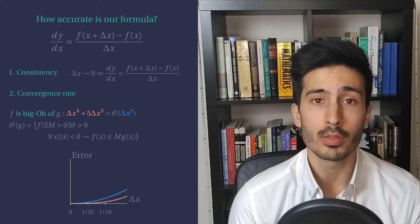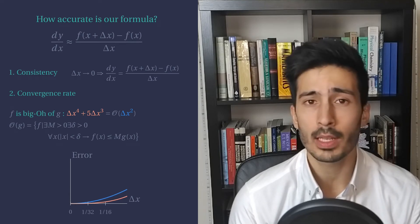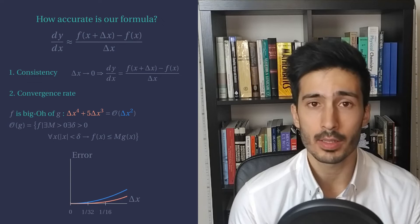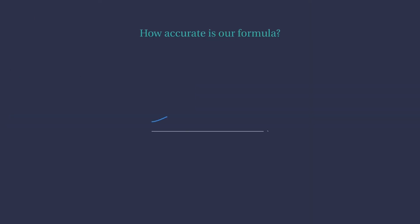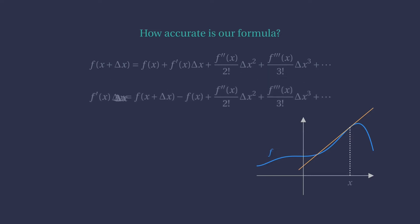Well, the strategy we use to find our formula doesn't really tell us how accurate it is. We must use a different approach. Let's consider the Taylor expansion of f at x. We can rewrite it in order to the derivative of f. The extra terms in this expression are big O of delta x. So our formula is first-order accurate, meaning that if we decrease the delta x by tenfold, we can expect more or less a tenfold decrease in our error.